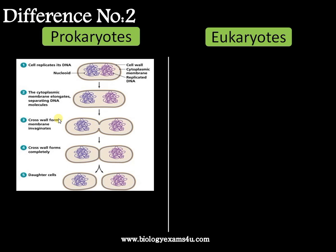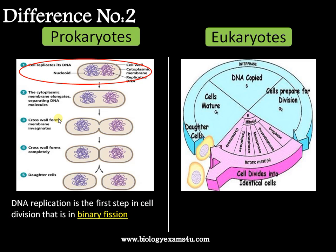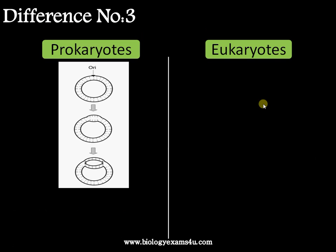Difference number two: in prokaryotes, DNA replication occurs in connection with cell division — it is the first step in binary fission or budding. Whereas in the case of eukaryotes, it is a complex process within the cell cycle; DNA replication occurs during the synthesis phase, that is the S phase of the cell cycle.